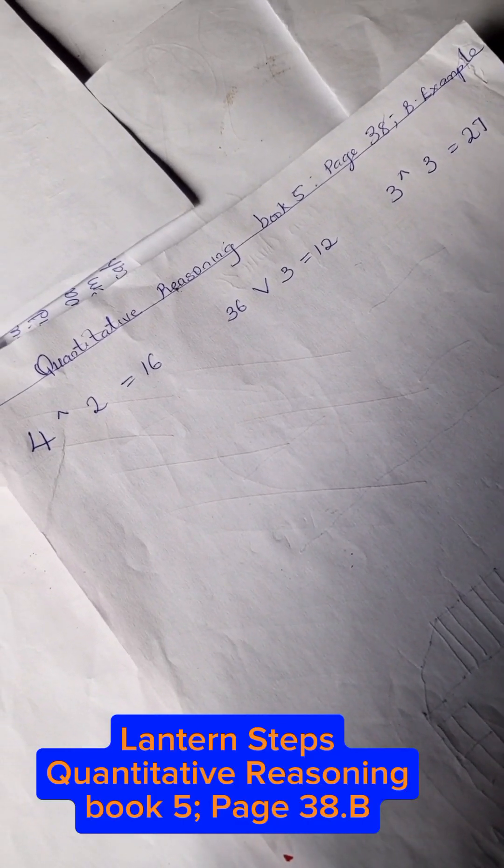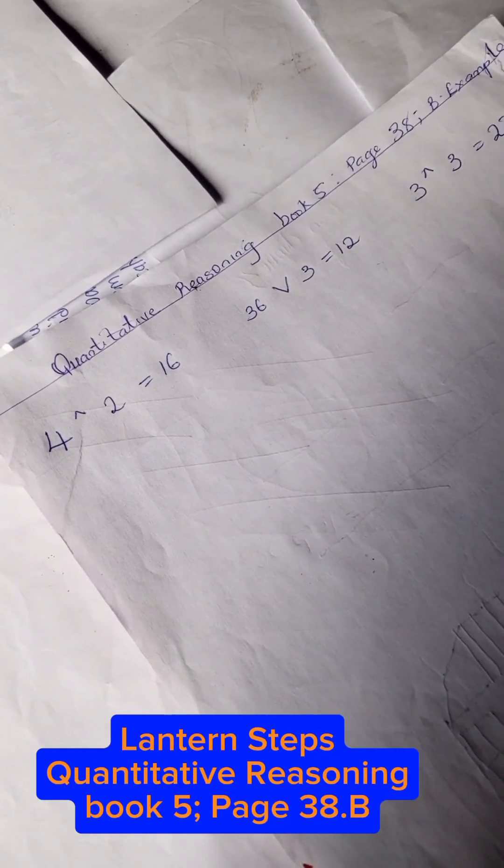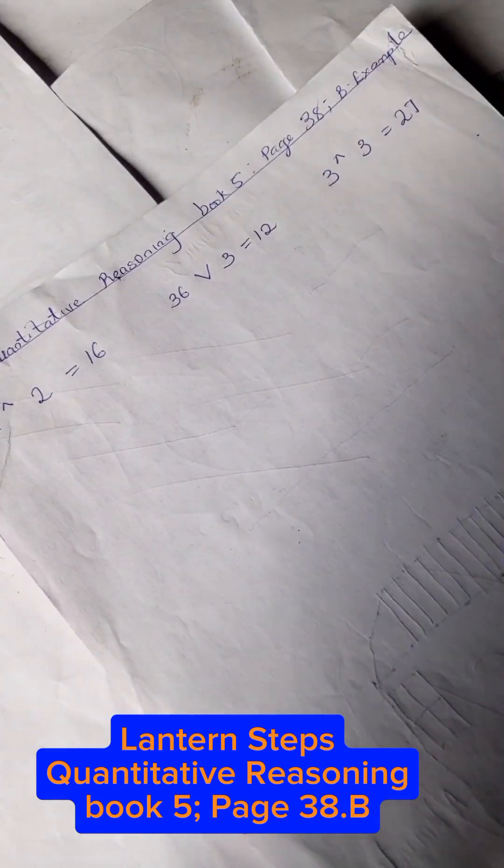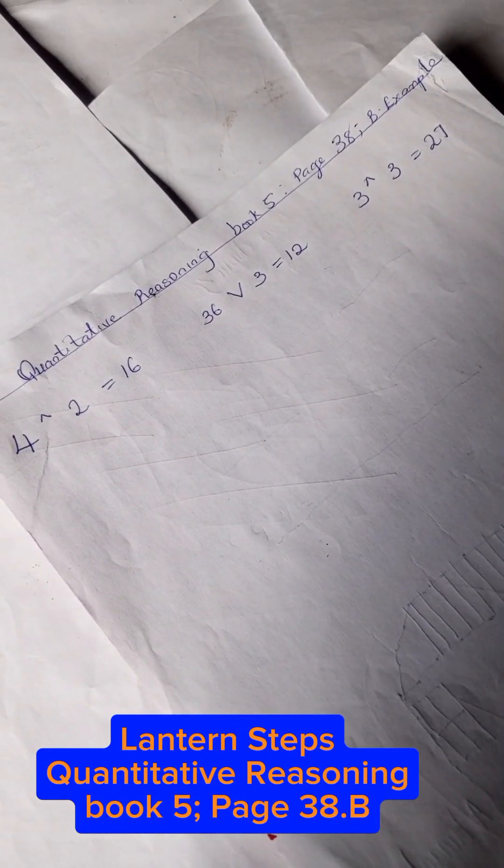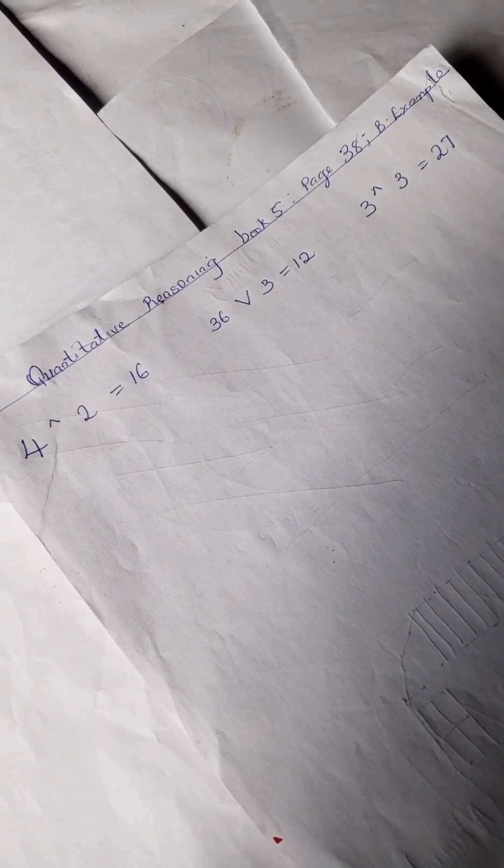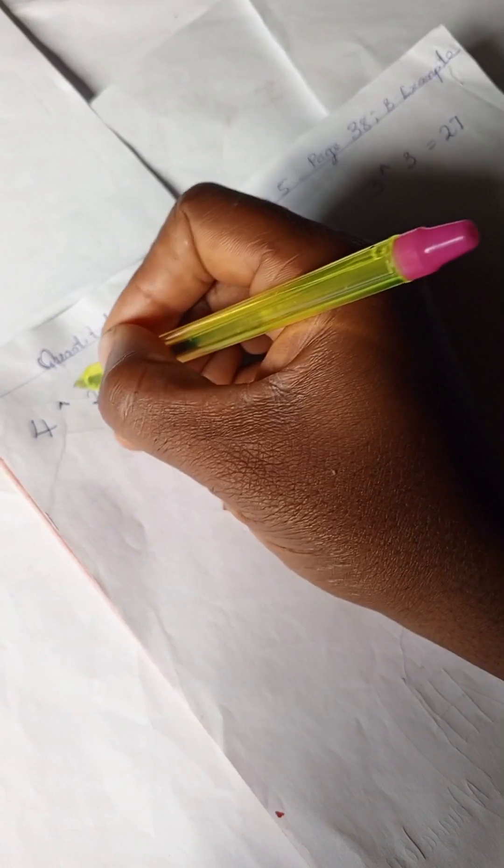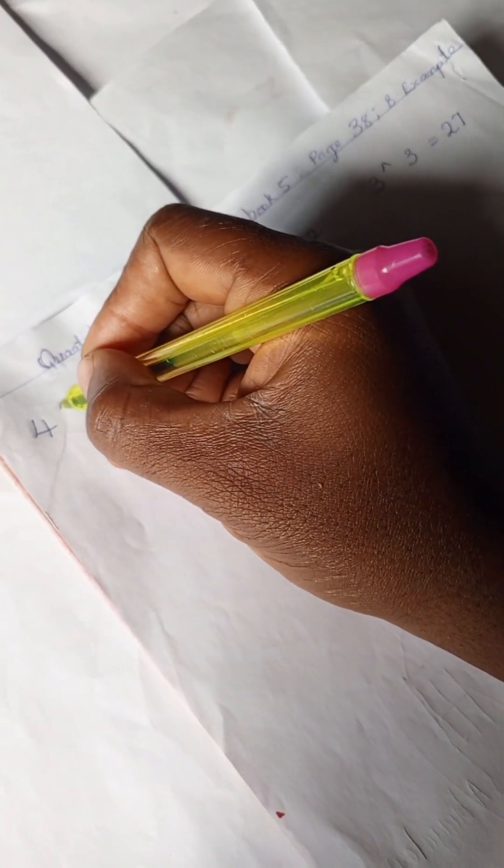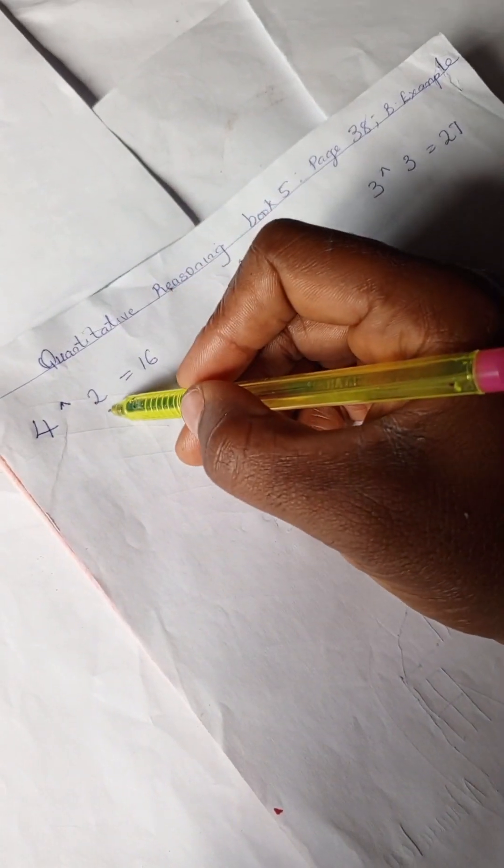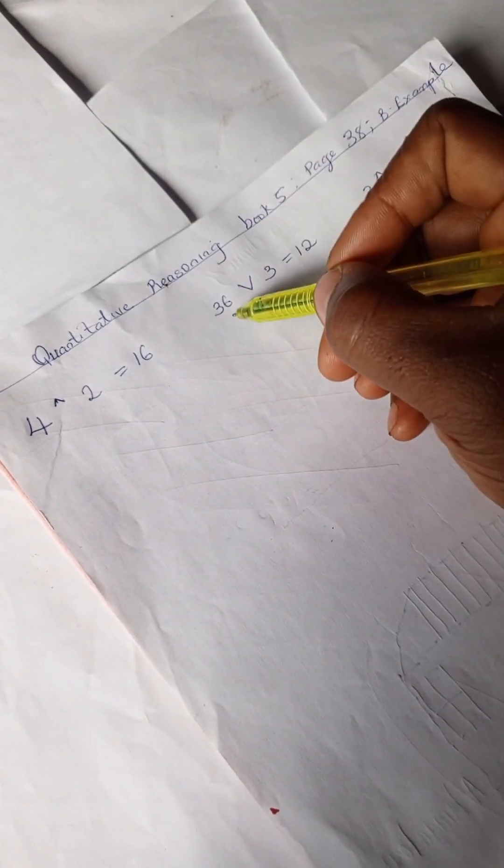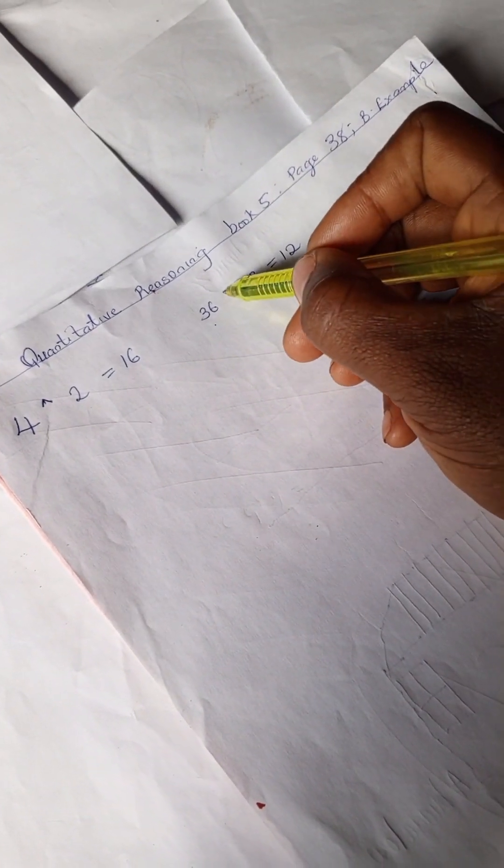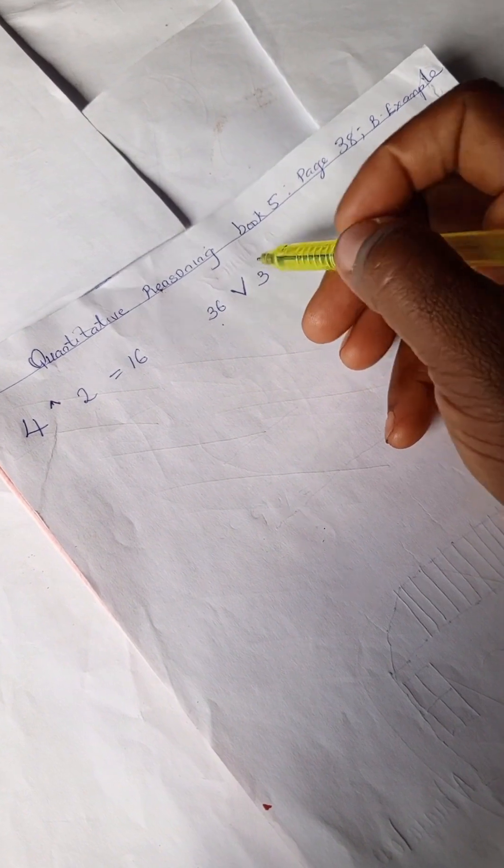Hello everyone, welcome to quantitative reasoning solution section. Today we have book five quantitative reasoning. So we have this problem, we have four with a pass sign, this is very little, and two we have 16 and we have 36 and a symbol that looks like a v.